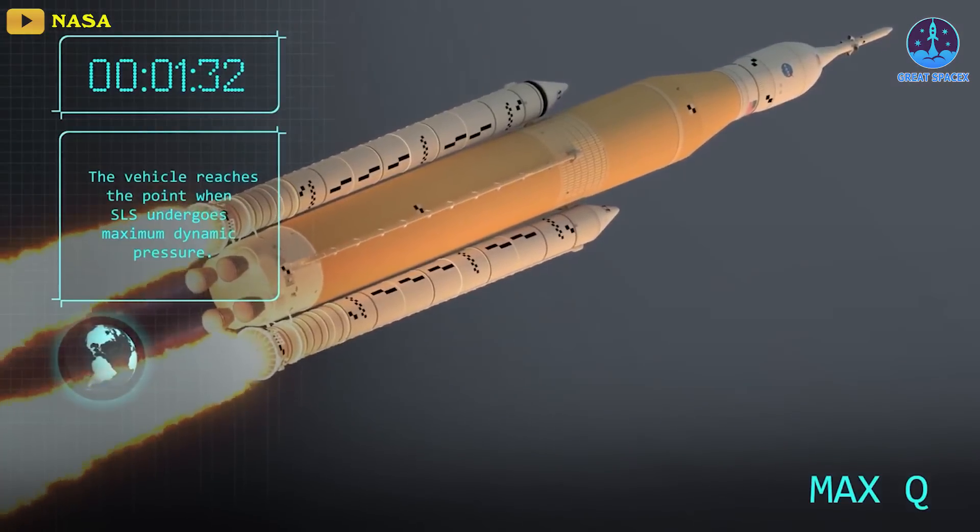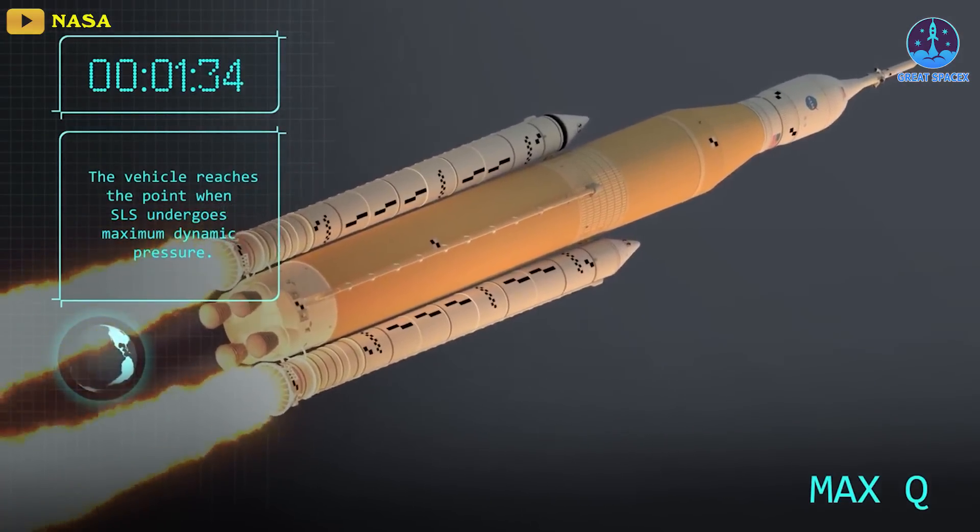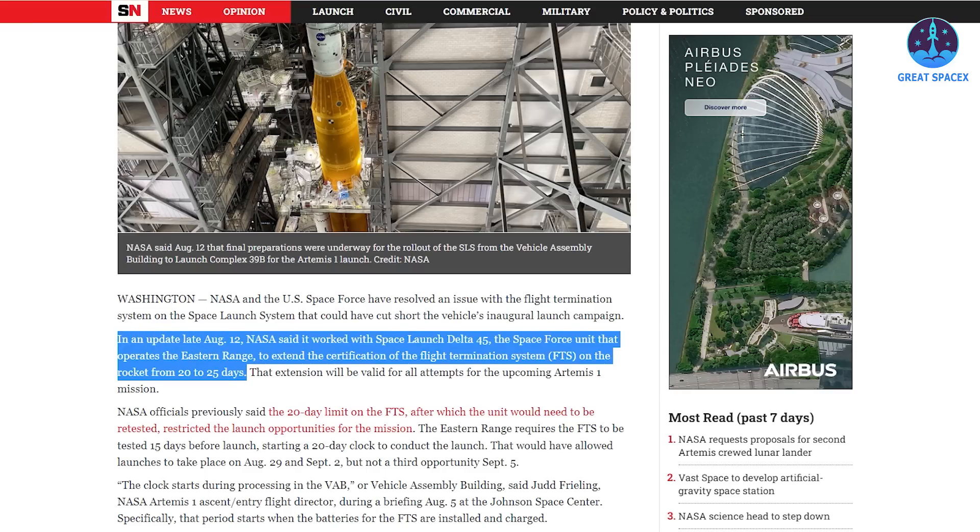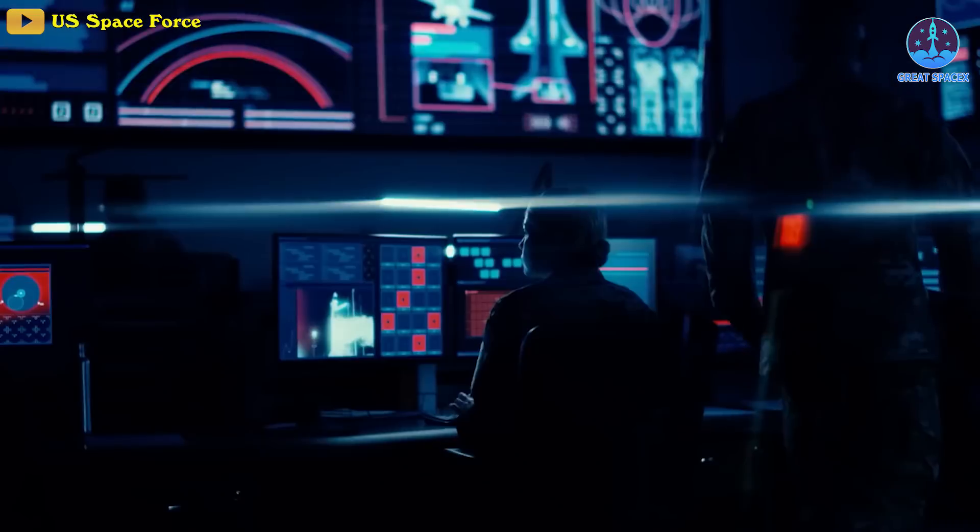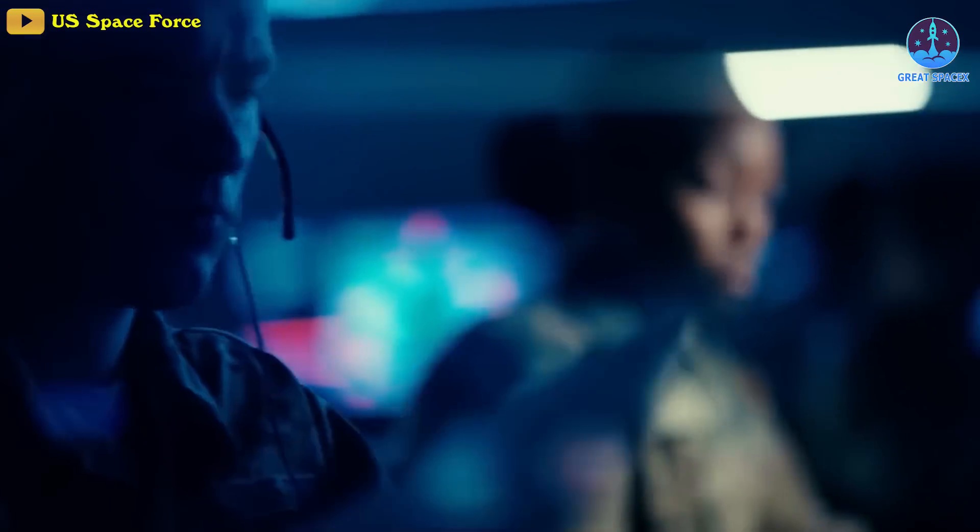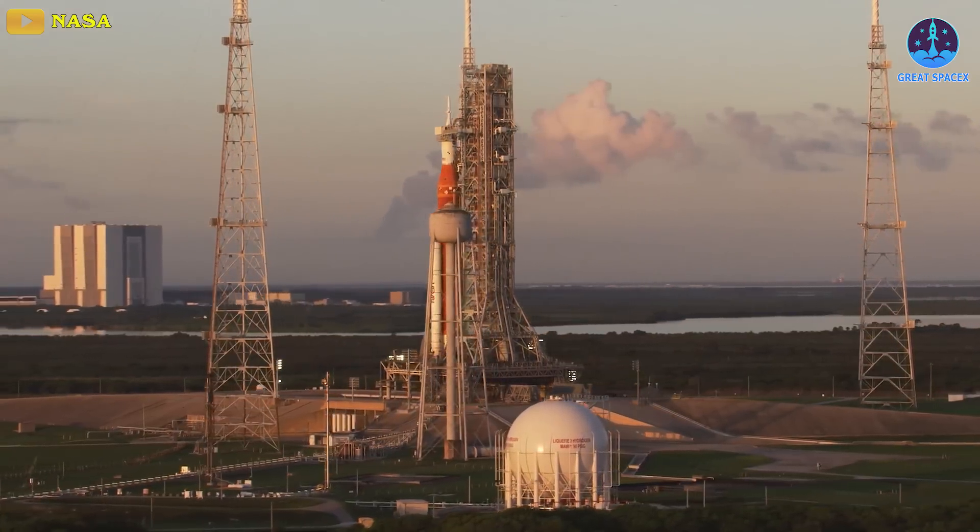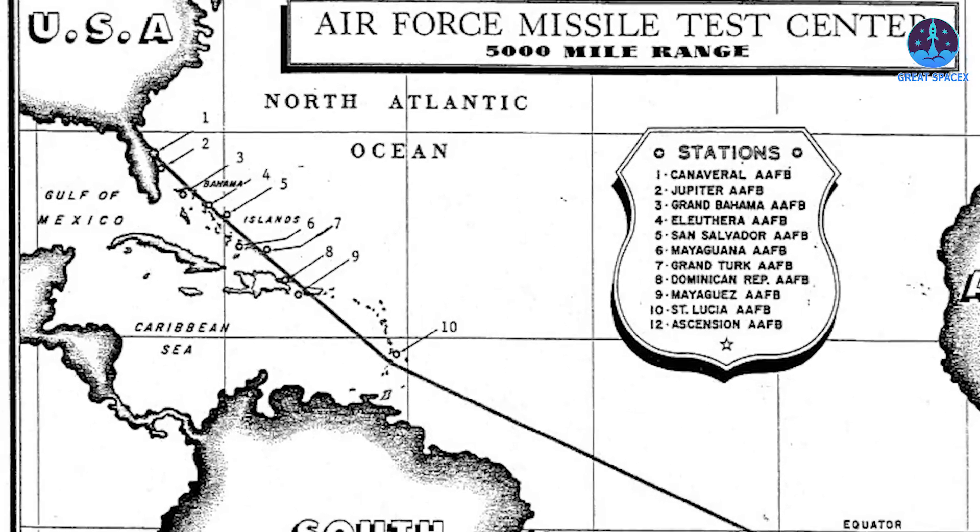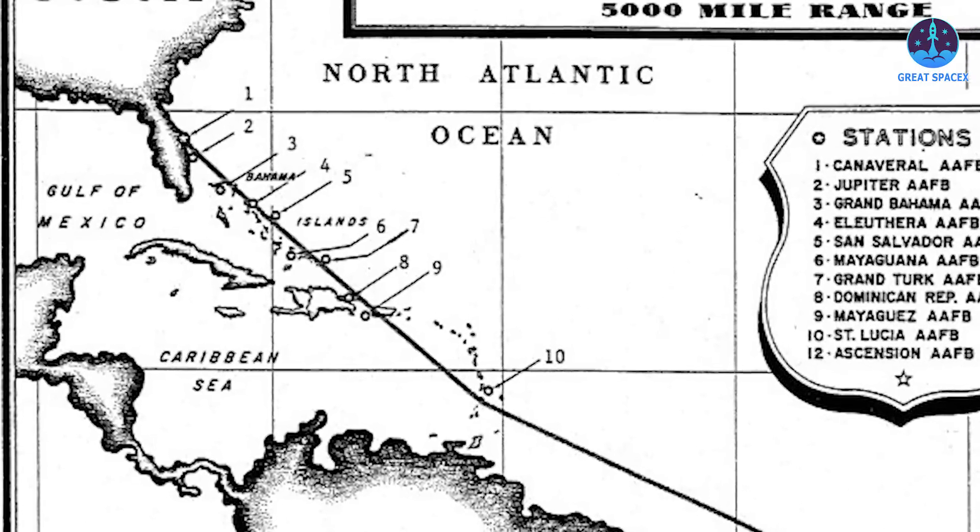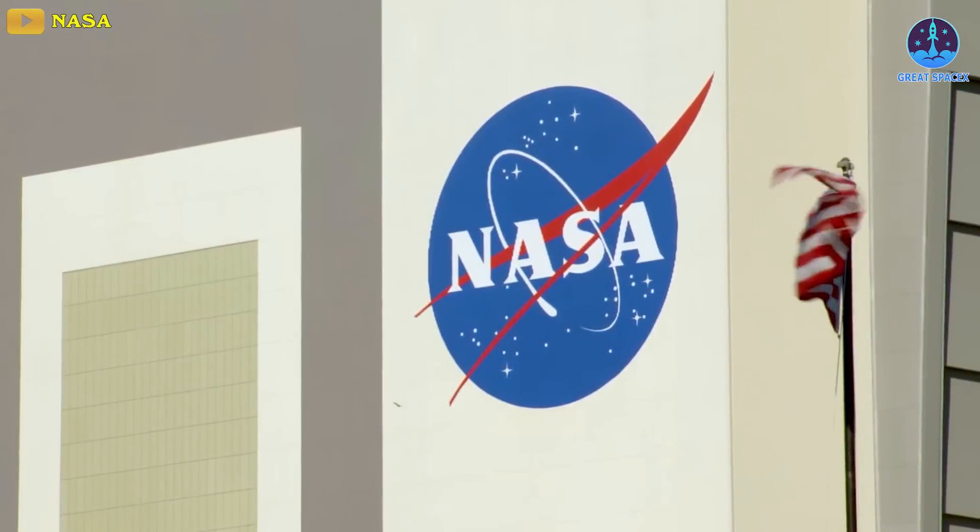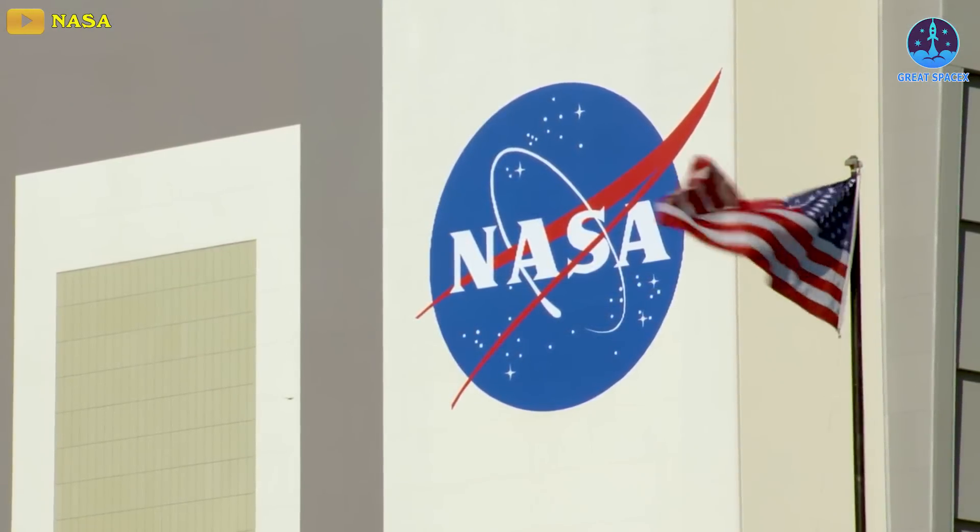The mission's flight termination system, which is designed to destroy the rocket if it veers off course during launch, was certified for just a 25-day stretch. That time is already up and NASA needs a waiver from the US Space Force to let Artemis 1 launch in its present condition. The Space Force oversees the eastern range for rocket launches. NASA already received one such waiver from 20 days to 25 days and has requested for another one.